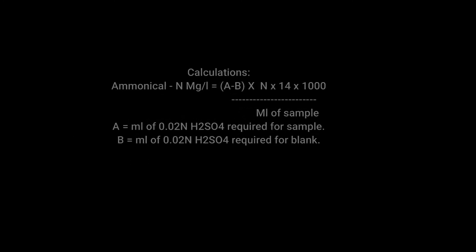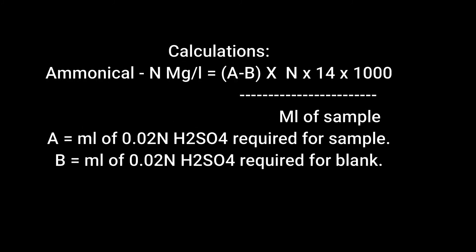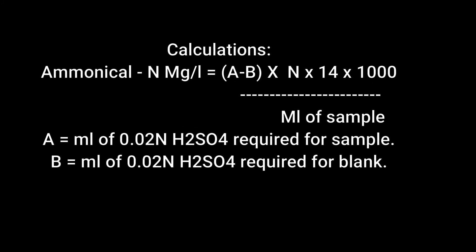For ammoniacal nitrogen calculations, use the formula: (A minus B) multiplied by the normality multiplied by 14 multiplied by 1000, divided by ml of sample. Where A equals ml of 0.02 normal H₂SO₄ required for the sample, and B equals ml of 0.02 normal H₂SO₄ required for the blank.